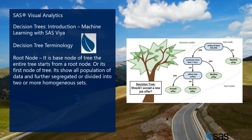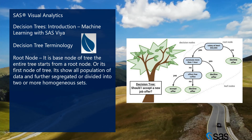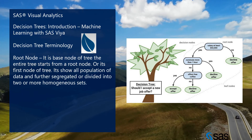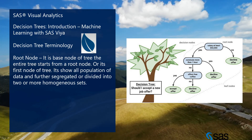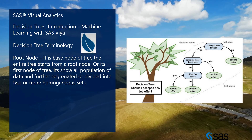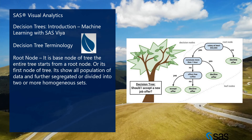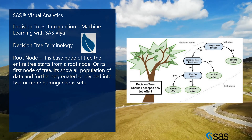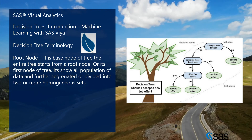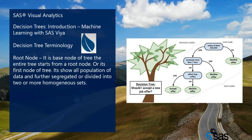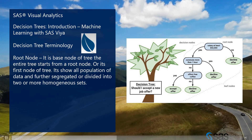Next is decision tree terminology. We have multiple nodes. Starting with the root node: the root node is the base node of the tree. The entire tree starts from the root node — it is the first node of a tree and shows the entire population of data, which is further segregated or divided into two or more homogeneous sets. The root node is essentially the parent node of all our data.